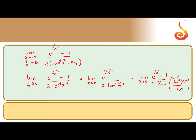This gives us limit tending to 0 of [e^(1/x²) - 1] divided by [1/x²], all over [tan inverse (1/x²)] divided by [1/x²]. We have now brought all into standard limits. The 2 is left here. As x extends to infinity, 1/x tends to 0, and 1/x² also tends to 0.